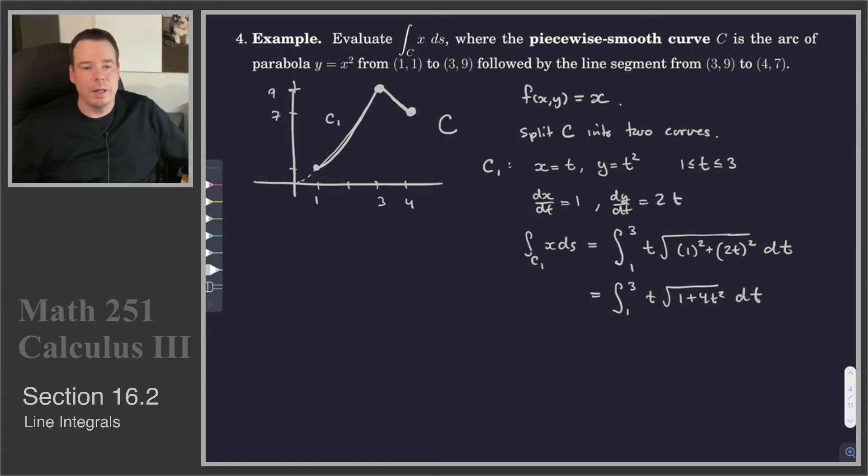So we're back to a calculus 2 type integral. This integral is representing the area above the parabola and below the function f(x,y)=x, so below this plane z=x. So let's go ahead and compute this.